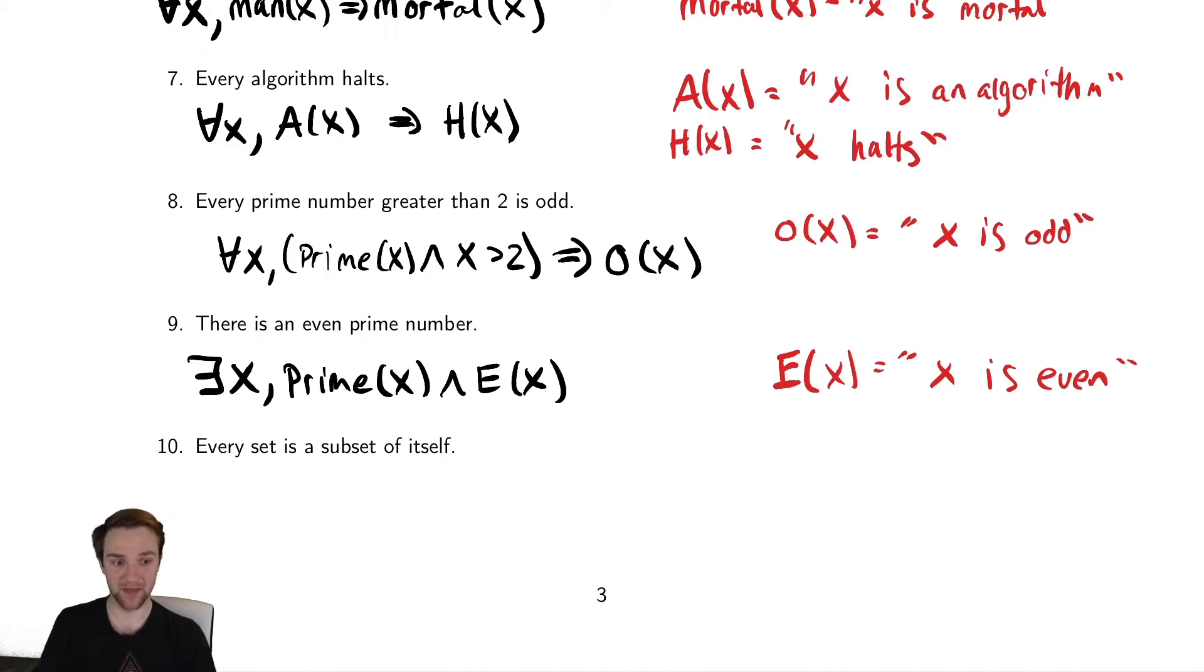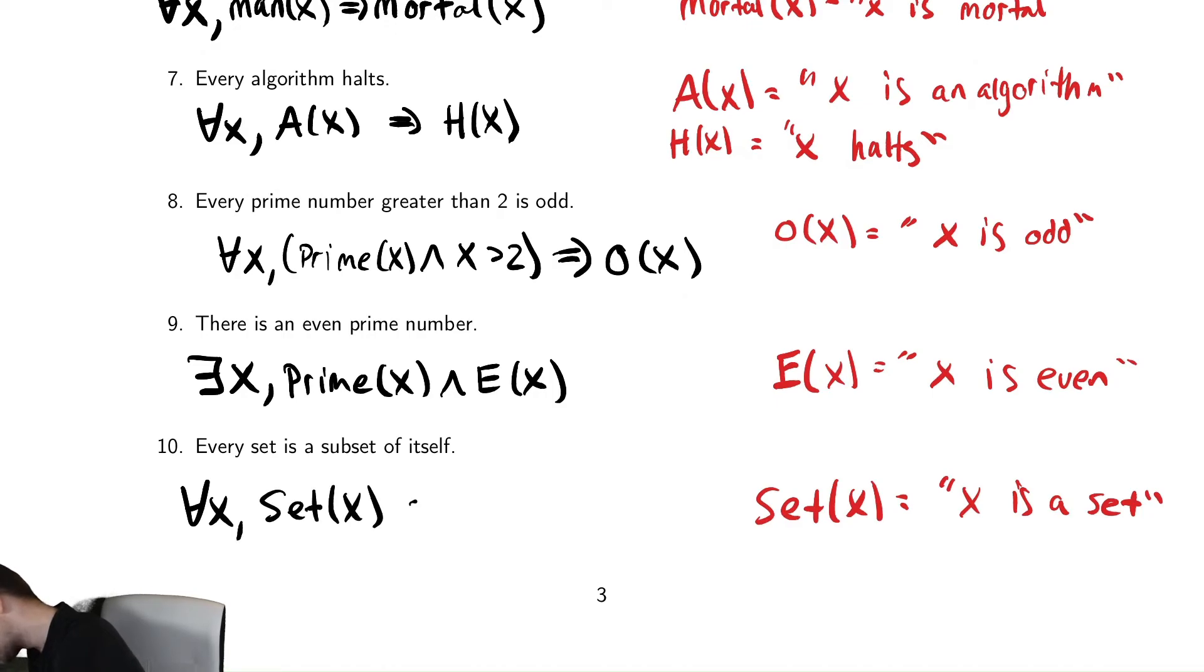The last one says every set is a subset of itself. We said this exact idea when we talked about sets, so let's try and represent that here. We actually don't need too much notation here, but we don't have a way of saying something is a set, so let's try to write that down. So we'll have a predicate that says something is a set. It's going to say x is a set. And we're going to say for all x, if x is a set, then x is a subset of x.